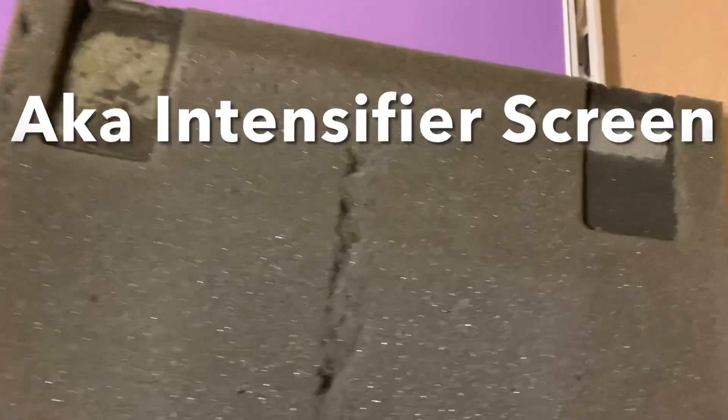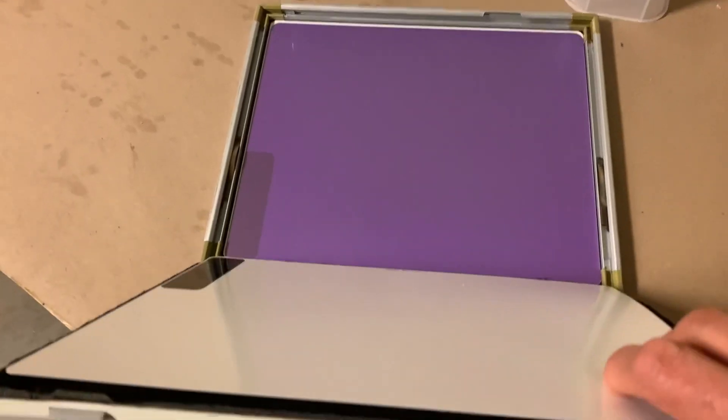And this was actually glued on, I had to rip it off, it was glued onto these little pads here so I just kind of tore it off. So there, that's how you get your green screen out of your cassette.